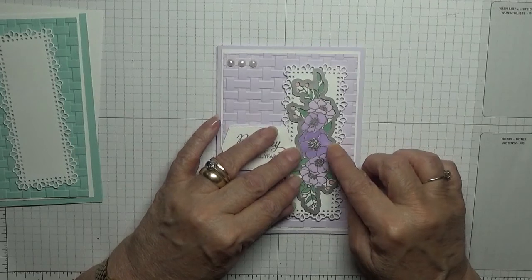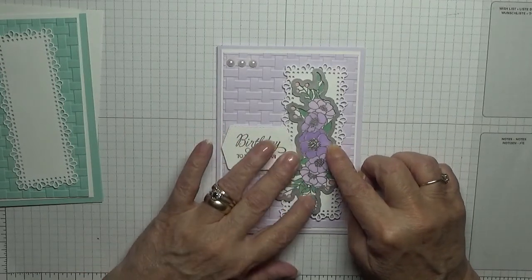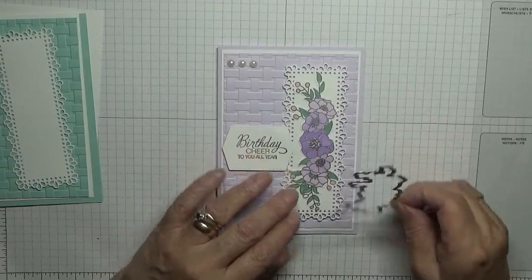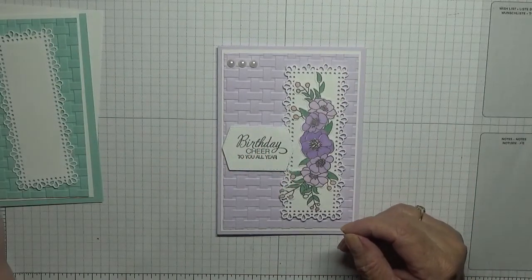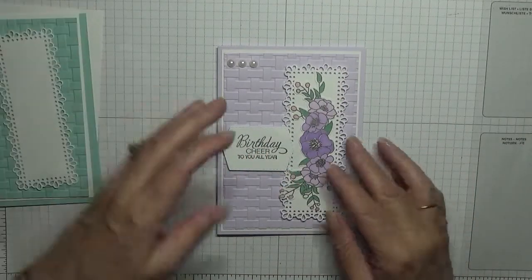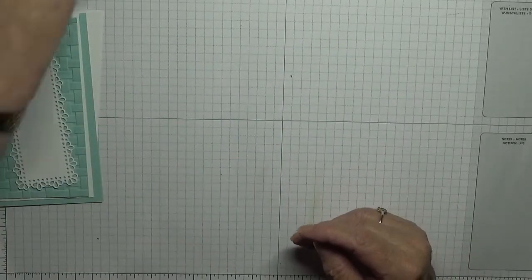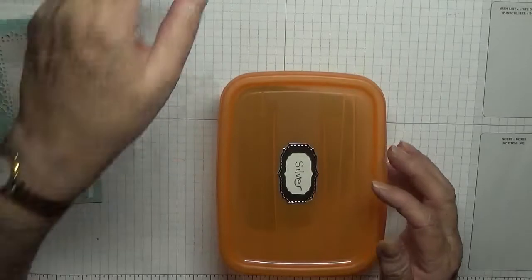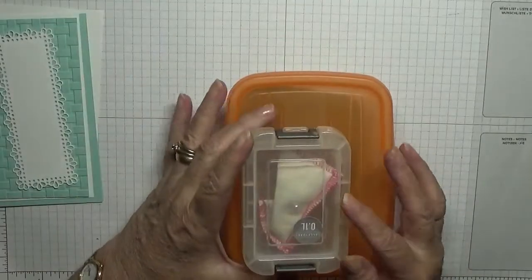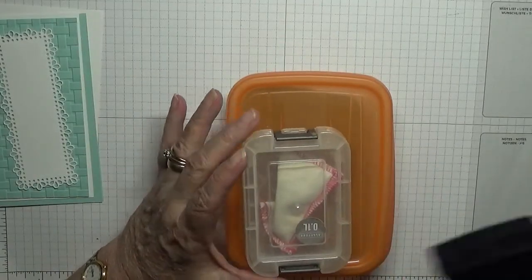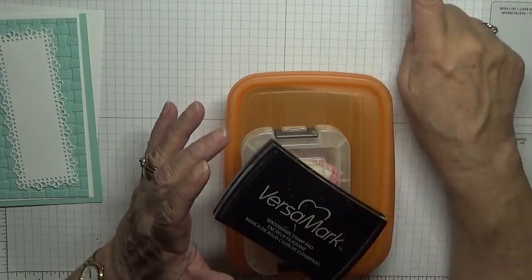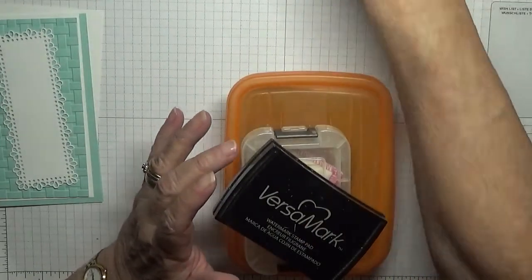I've also got some silver embossing powder, my dust buddy, my Versamark, and my heat gun which is over there.